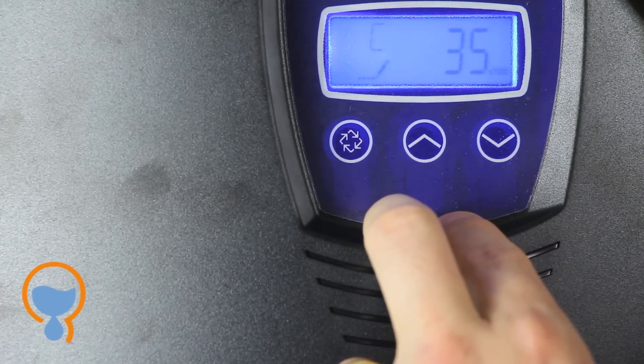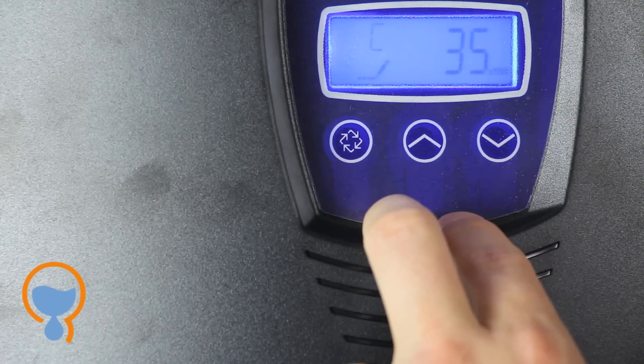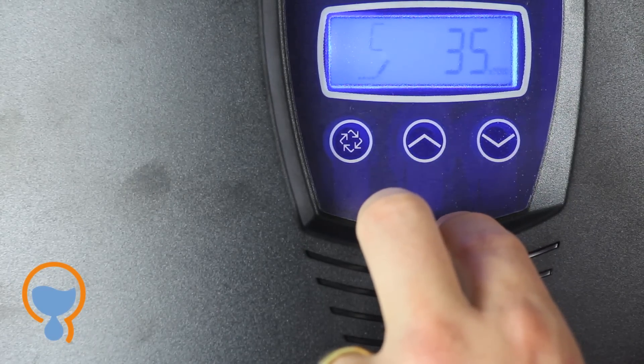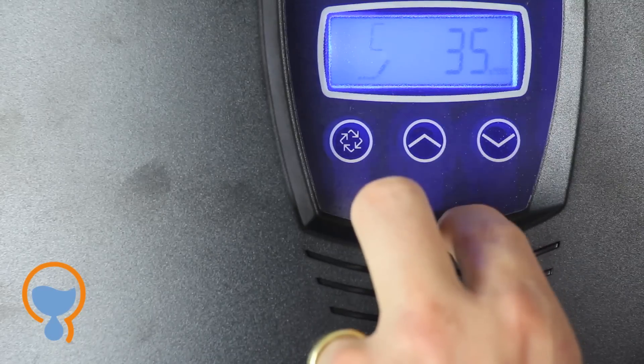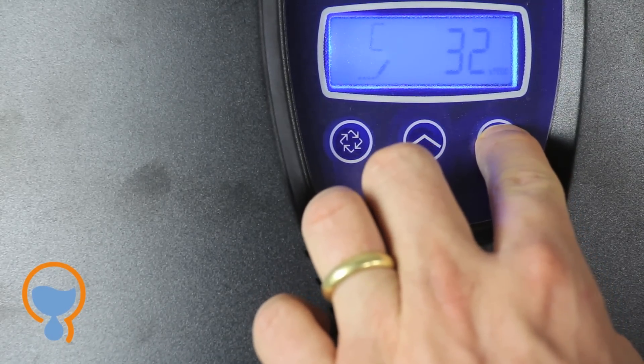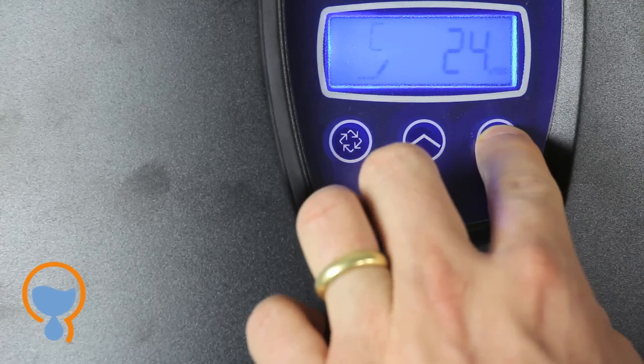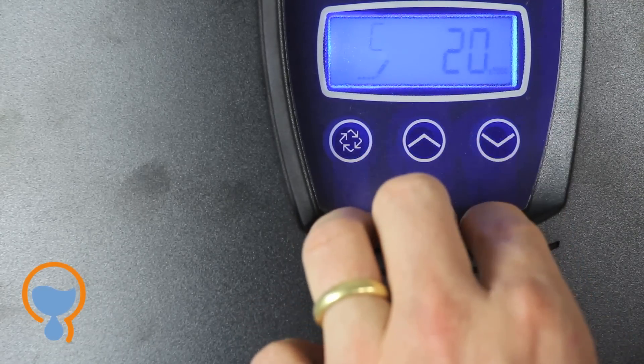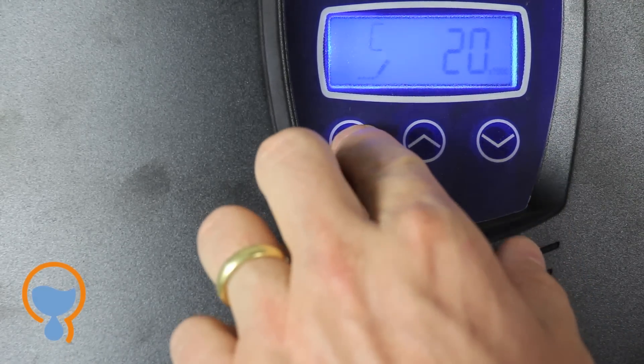The capacity. The capacity that we program in depends on the size of the water softener that you purchased. In this case we're going to assume that this is a one cubic foot unit. So we're going to program the capacity to the highest salt efficiency settings which in this case is 20 times 1000. Press enter.